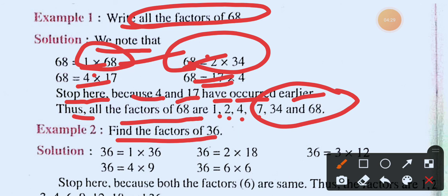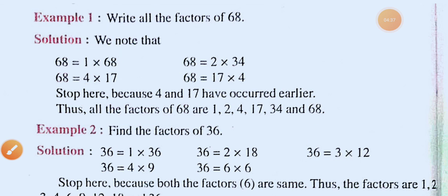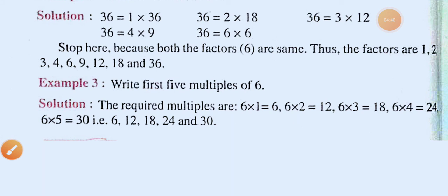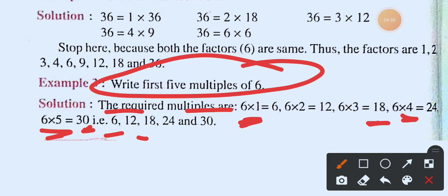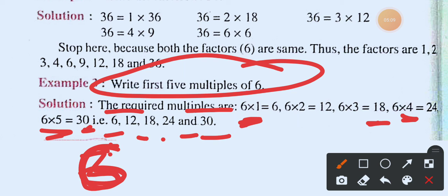Similarly the factors of thirty-six are: one, two, three, four, six, nine, twelve, eighteen, and thirty-six. The multiples of six are: 6 × 1 = 6, 6 × 2 = 12, 6 × 3 = 18, 6 × 4 = 24, and so on — giving us six, twelve, eighteen, twenty-four, thirty, and beyond.